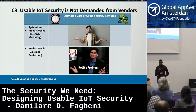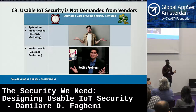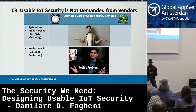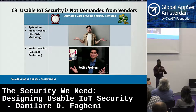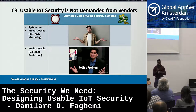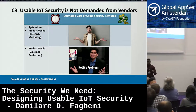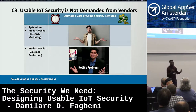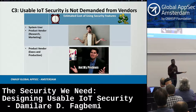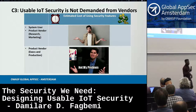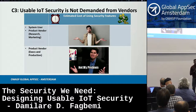The third C: we don't demand usable security from vendors. Those of us who use security tools are not exactly sure about how much it costs us to use security features — for instance, configuring a secure connection from an IoT app to the cloud. There is no measurement of that cost, and there is little research from vendors about the cost of using security, so no one owns the problem of bringing that cost down.